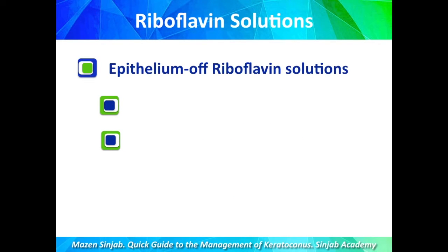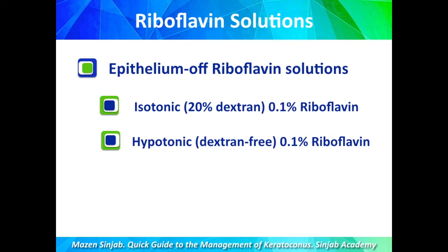Before starting with the protocols, we need to know the riboflavin solutions used for epithelium-off techniques. There are two types: the isotonic solution, which contains 20% dextran, and the hypotonic solution, which is dextran-free. The isotonic solution causes shrinkage in the stroma during application, while the hypotonic solution, being dextran-free, swells the stroma after application.